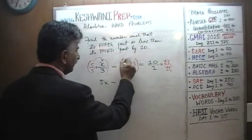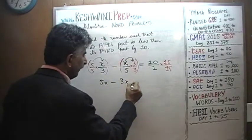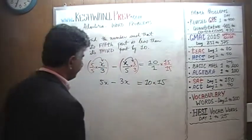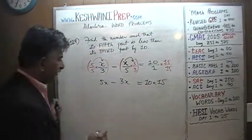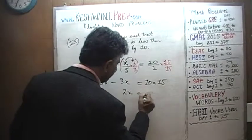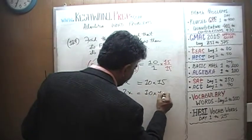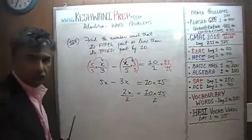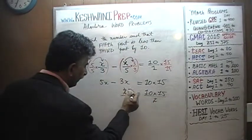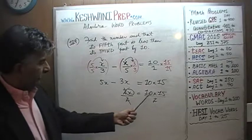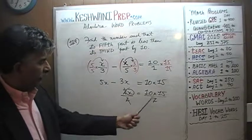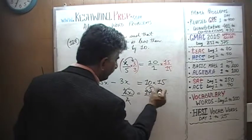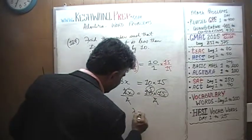Now we have 5 times X, which is 5X, minus 3 times X, which is 3X, and that equals 10 times 15. 5X minus 3X is 2X, which equals 10 times 15. Dividing both sides by 2, the 2 cancels and 10 becomes 5, giving us 5 times 15.